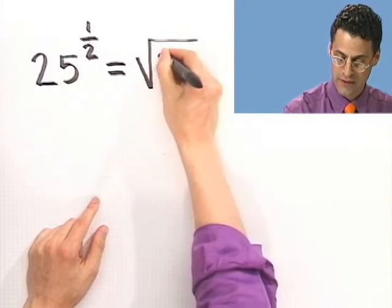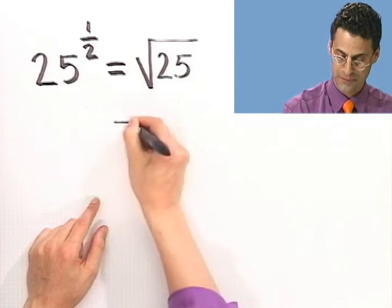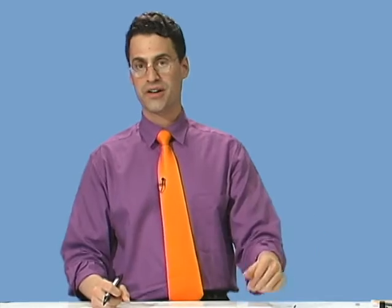OK. So how would you do this? Well, this is just simply saying take the square root of 25 and the square root of 25 is 5. So there you go.